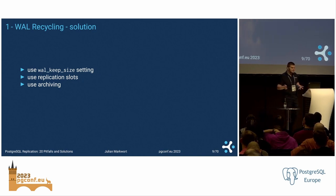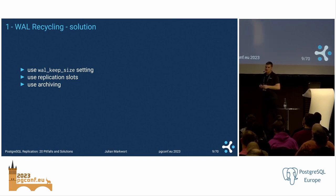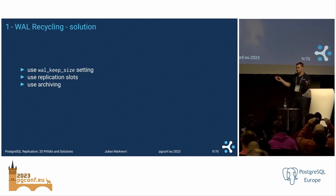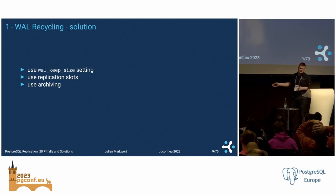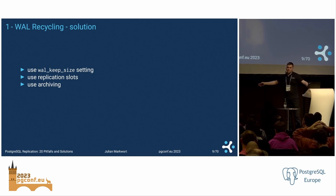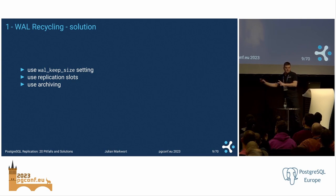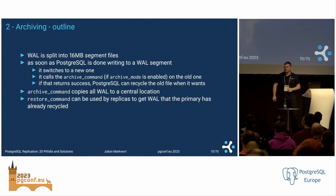The solution is to use the wal_keep_size setting. You can specify an amount in megabytes, gigabytes, maybe even terabytes — whatever you think is enough to cover most of your expected downtimes of a replica, network interruptions, and maintenance tasks. Look at how much WAL you're writing in half a day and put that in wal_keep_size. The second option is to use replication slots, and the third is to use archiving — which brings us to the next pitfalls.